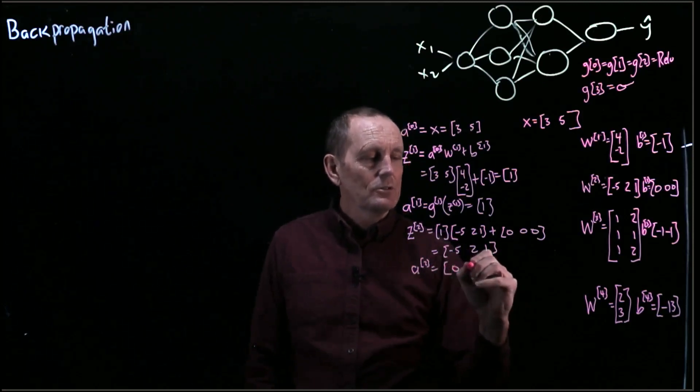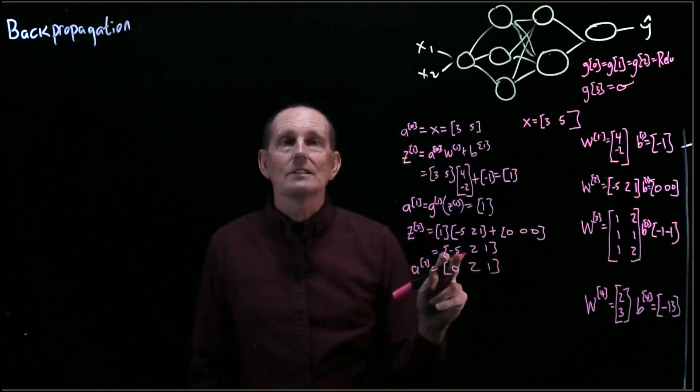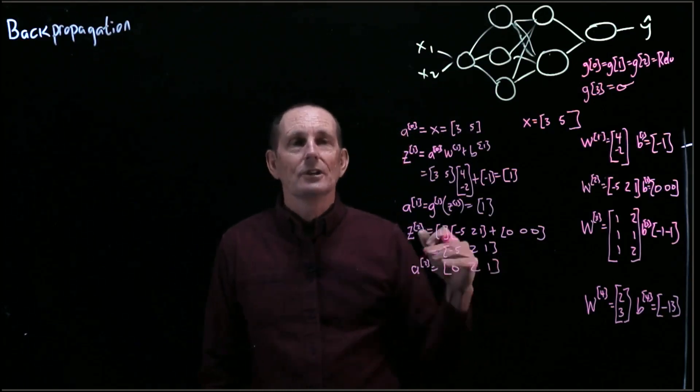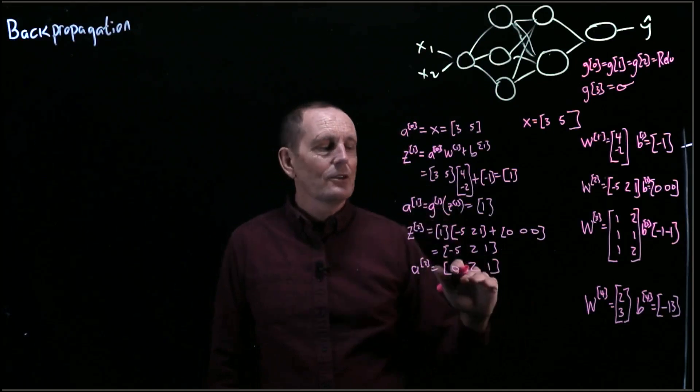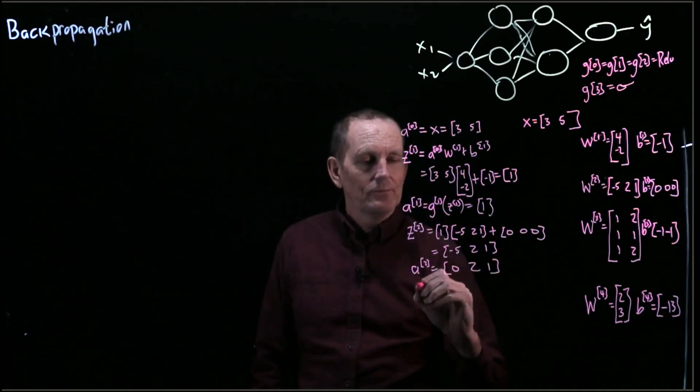Which equals 0, 2, 1, right? So negative 5 is less than 0, so that's going to be taken to 0, 2, and 1 gets left alone.